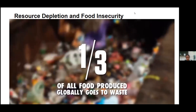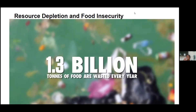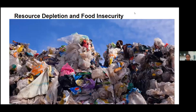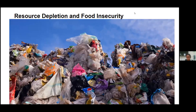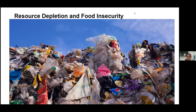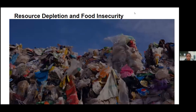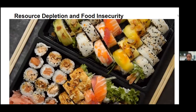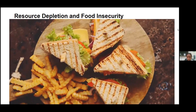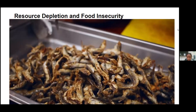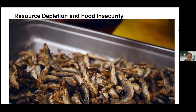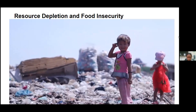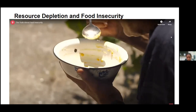One third of all food produced globally goes to waste — 1.3 billion tons, or 1 trillion dollars of food, wasted every year. Just one quarter of the food wasted by the EU, UK, and US could feed all the world's hungry. There is more than enough food for everyone, but our food system guarantees that some will go hungry. We do not currently have a problem of supply and demand — we have a problem of production and distribution. Food insecurity is not a natural result of population growth, but a man-made crisis caused by a failing, inhumane system.